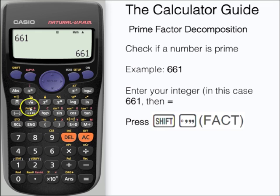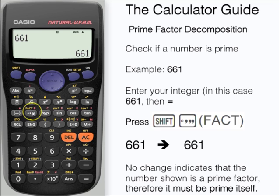The number doesn't change, indicating that we are displaying the number as a prime factor, and therefore the number 661 must be a prime number. It's a very good way of checking a higher number to see if it is prime.